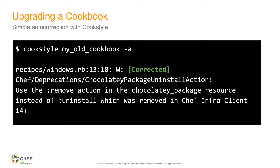Let's look at how you actually perform one of those cookbook upgrades. This is the most basic usage of Cookstyle: you run a command called cookstyle, point it at a directory, and specify dash-A. Dash-A is for autocorrect — so we want to not only scan this cookbook but autocorrect anything we find. It could be a single cookbook or an entire repo if you're using a mono-repo structure, or just a development directory on your system.